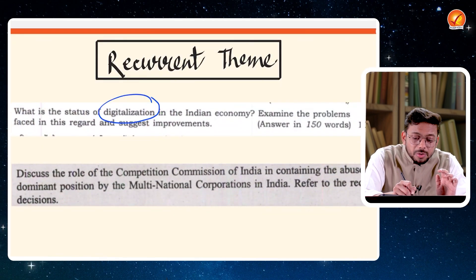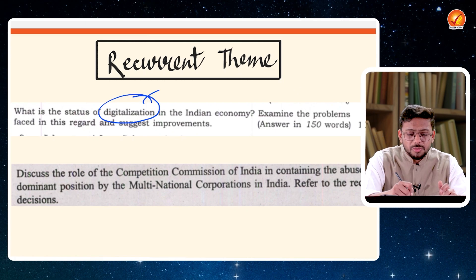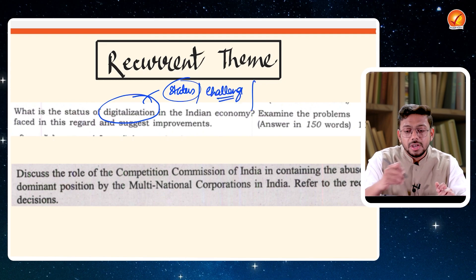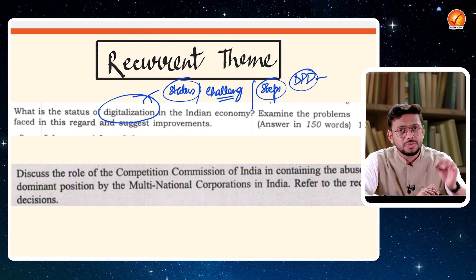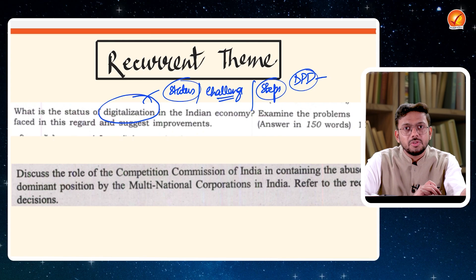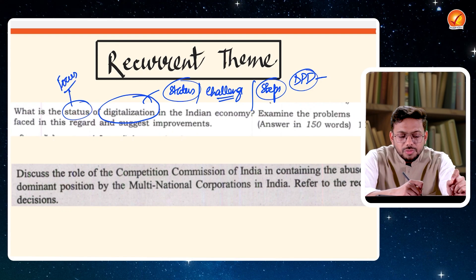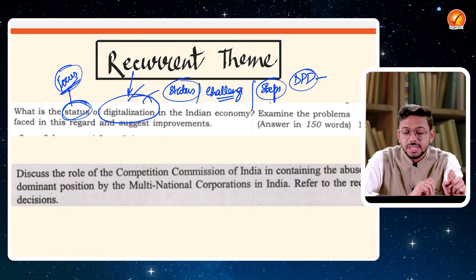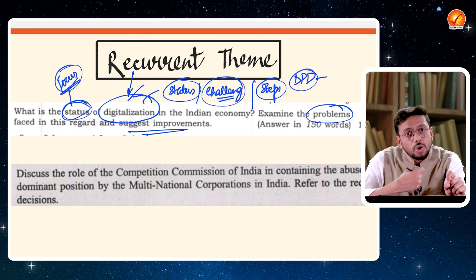Another example: digitization, digital economy, Digital India — these are recurrent themes. What can UPSC ask? The present status of digitization, the challenges India is facing, and the various steps India has taken. So many apps have been launched — digital public infrastructure like Aadhaar, UPI, the COVID app. These are digital public infrastructures. The question can be: what are the various steps the government has taken? The focus area is status and challenges, and when you read the question, you get the topic. Then what is being asked — status, problems, challenges, way forward — simple.